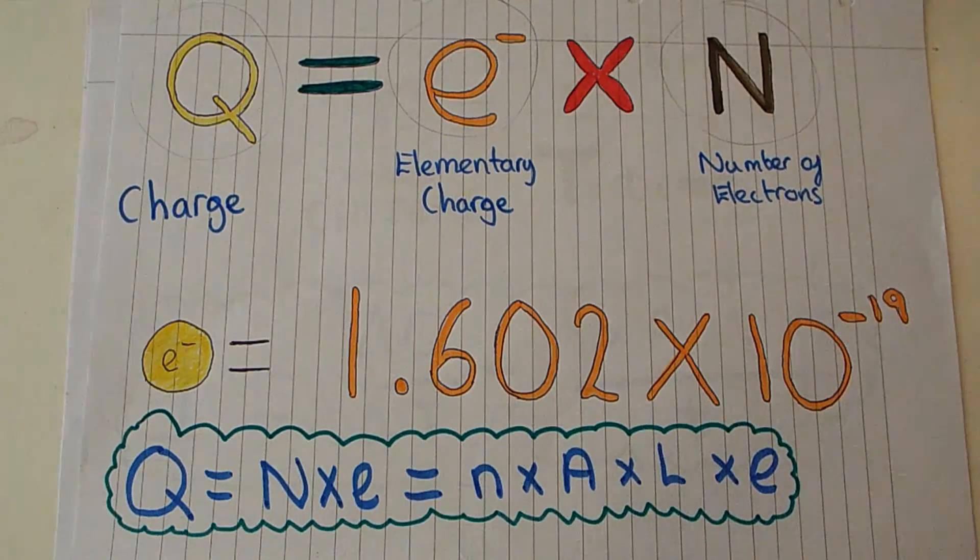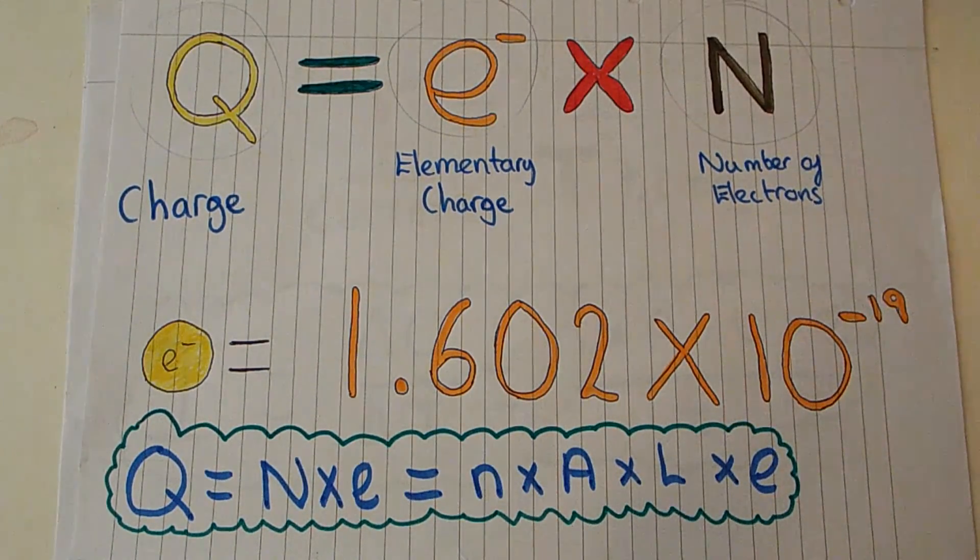So this gives us charge equals elementary charge e times number of electrons N, and we just said that the number of electrons is equal to electron density n times the volume, and volume is equal to the cross-sectional area A times length L, giving us charge equals e times n times A times L.